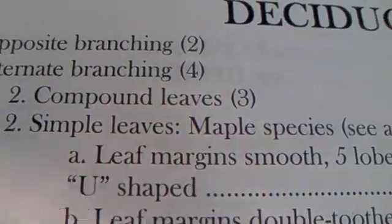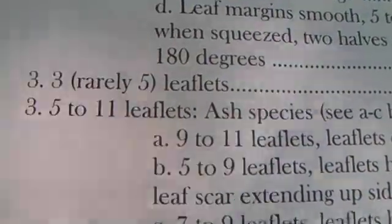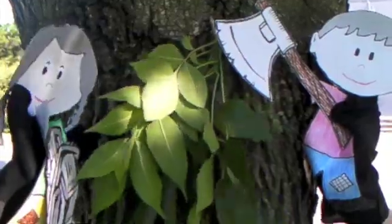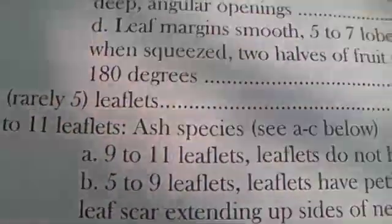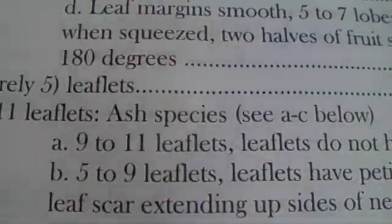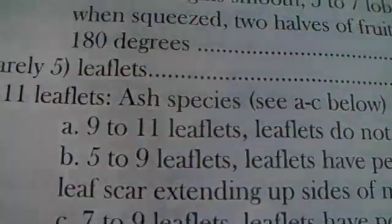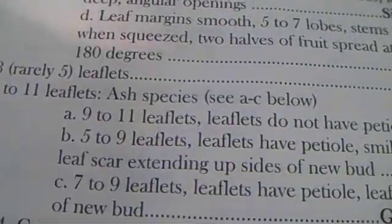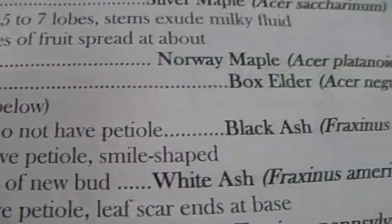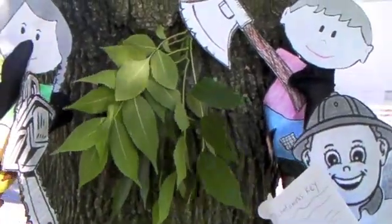Compound — let's go to step number three. Are there three leaflets or more? There's definitely more than three. So we know it is not a box elder. It must be an ash species. Let's go to steps A through C. Does it have nine to eleven leaflets? One, two, three, four — this one only has five. Five to nine leaflets. It's a white ash. Can we cut it down? No, no. This is a non-allergenic tree. We should leave it.